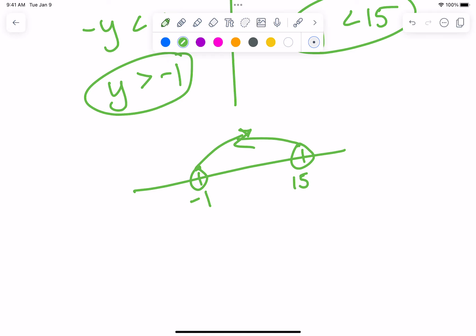Interval notation. One piece or two pieces? Do we have to graph it? It doesn't say the graph? It wants set builder and interval? Negative 1 comma 15. Brackets or parens? Parens for both. That's interval notation. Good!